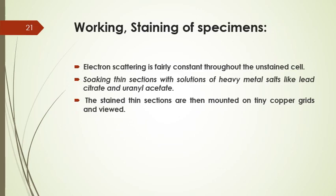The most important step is staining of the specimen. As with bright-field microscopy, cells must be stained to be seen clearly. The probability of electron scattering is determined by the atomic density and atomic number of the specimen atoms. Biological molecules are composed primarily of atoms with low atomic numbers — hydrogen, carbon, nitrogen, oxygen — and electron scattering is fairly constant throughout the unstained cell. Therefore, specimens are prepared by soaking thin sections with solutions of heavy metal salts like lead citrate and uranyl acetate, which bind to cell structures and make them more electron-opaque, increasing contrast. The stained sections are then mounted on tiny copper grids and viewed.